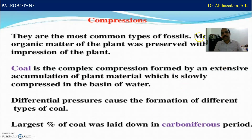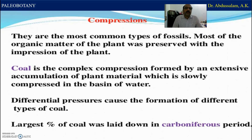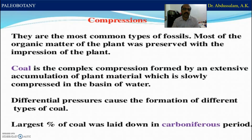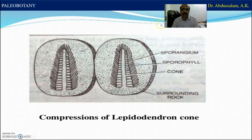What is compression? Compressions are the most common type of fossil — most of the organic matter of the plant was preserved with the impression of the plant. Coal is the complex compression formed by an extensive accumulation of plant material which is slowly compressed in the basin of water. Differential pressure caused the formation of different types of coal. The largest percentage of coal was laid down in the Carboniferous period. Compression of Lepidodendron — sporangium, sporophyll called strobilus — are examples of compression.